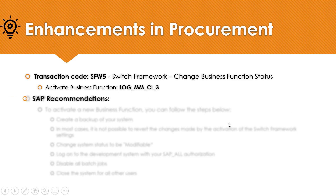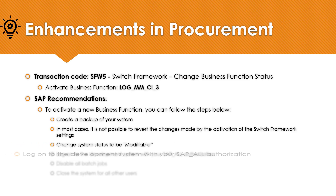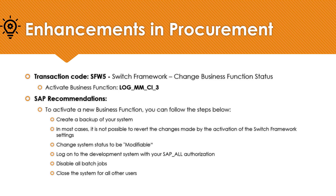Before we do that, here are SAP recommendations. To activate a new business function, follow these steps: create a backup of your system — in most cases it is not possible to revert changes made by the activation of the switch framework settings. Change system status to be modifiable. Log on to the development system with your SAP_ALL authorization. Disable all batch jobs and close the system for all other users. Normally, the activation of business functions is done by the SAP Basis team.